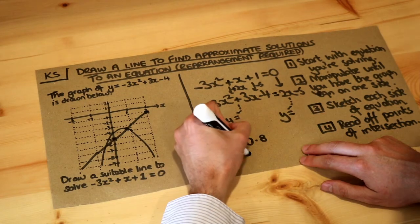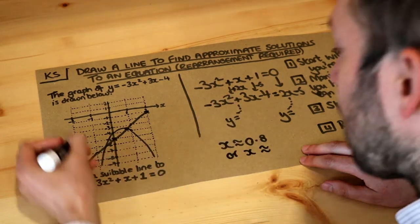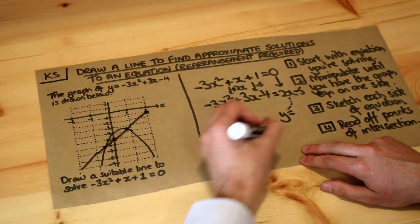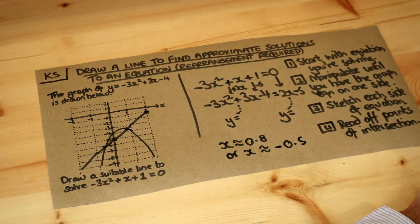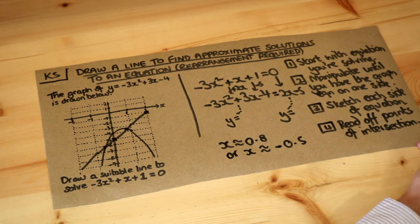What's the other one? X is approximately—we look at this other point of intersection, which is about here, I'd say maybe like minus 0.5. And that is the full process, so follow these steps on the right here.